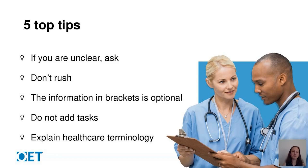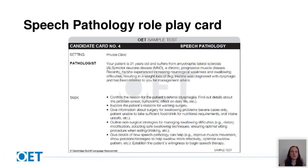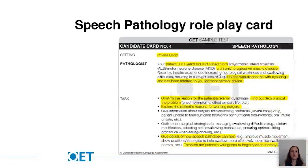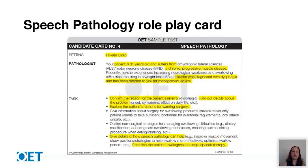I'm going to start with the speech pathology card. The setting is a private clinic and the background information tells us the patient is 31 years old with a chronic progressive condition. The tasks include confirming the reason for the patient's referral, exploring the patient's reasons for wanting surgery, giving details of how speech pathology can help, and establishing the patient's willingness to begin speech therapy.